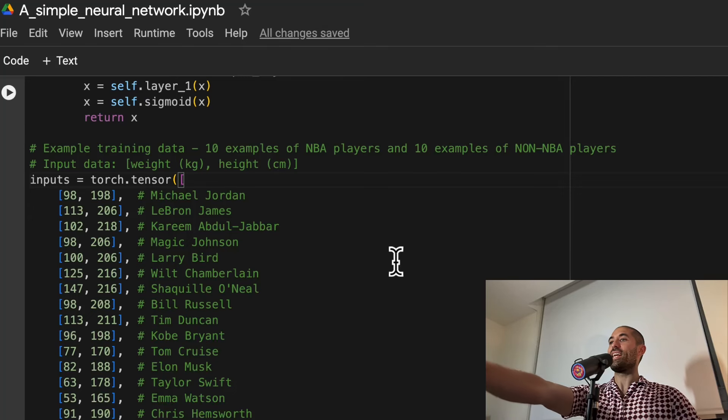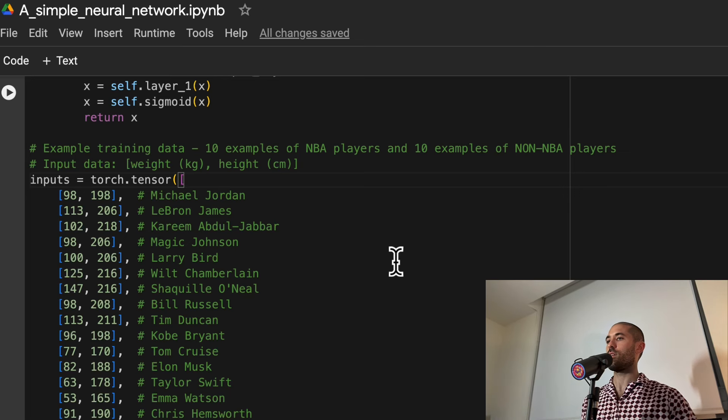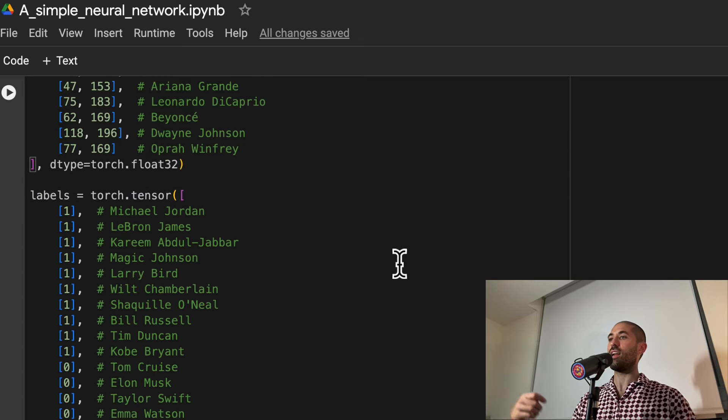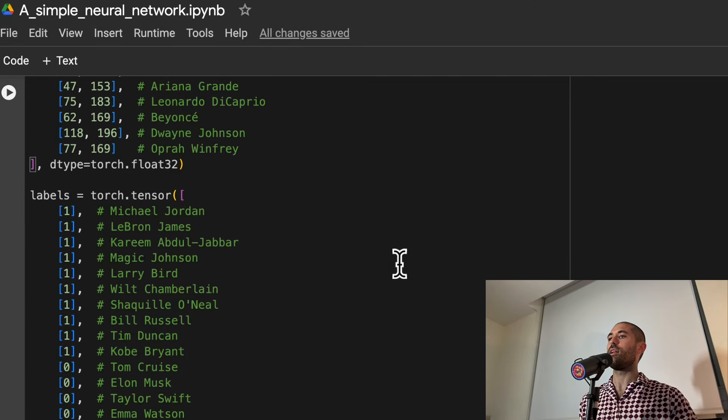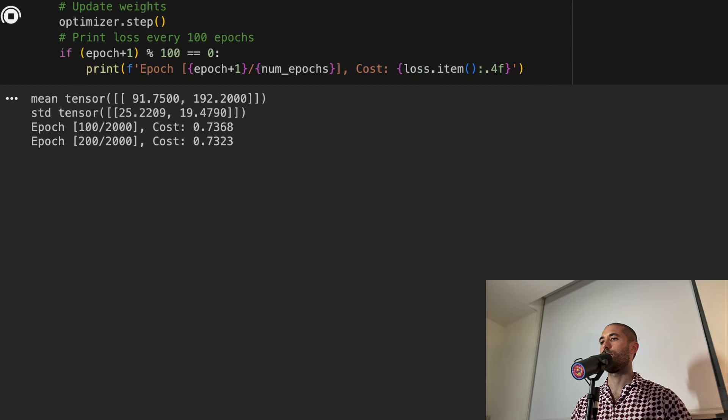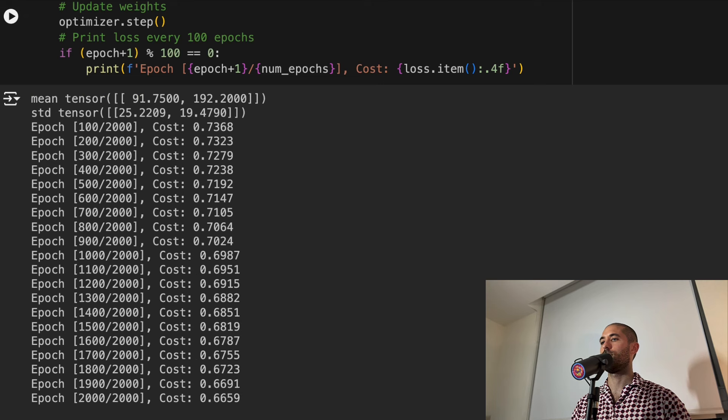Here is the weight and height data of the individuals we are going to use for training. I'm pretty sure you recognize some of these names. Here are the labels that tell us whether or not each individual is an NBA player. Let's now train our neural network on this data. You can see that as backpropagation progresses, or as training progresses, our cost is coming down. Let's now run those same individuals from before through our network and see what the neural network is saying about whether or not they are an NBA player.